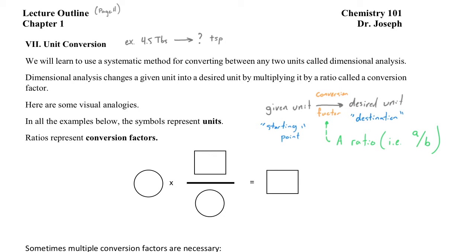To help explain how conversion factors change given units into desired units, I want to show you a simplified form of this process using the symbols shown here. I'm converting the circle unit into the rectangle unit, and to do so I have to use the conversion factor shown in the middle.